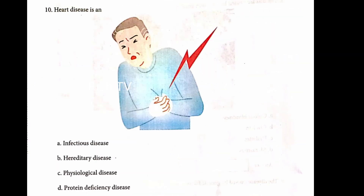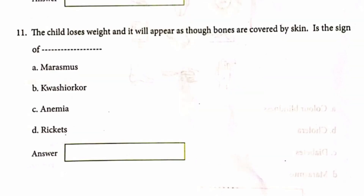Color blindness. Question number 8. Heart disease. Question 11. The child loses weight and it will appear as though bones are covered by skin — this is the sign of malnutrition.